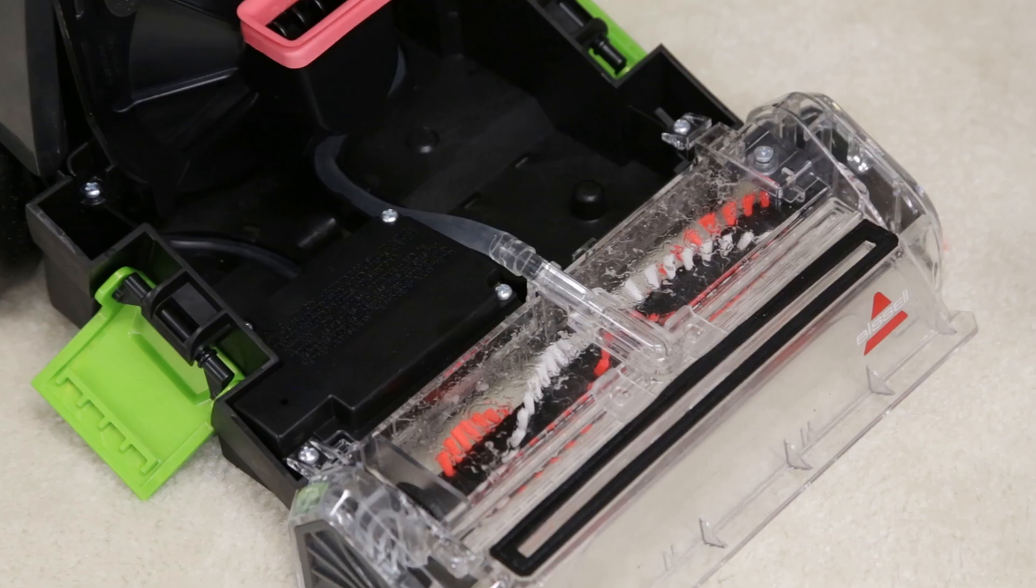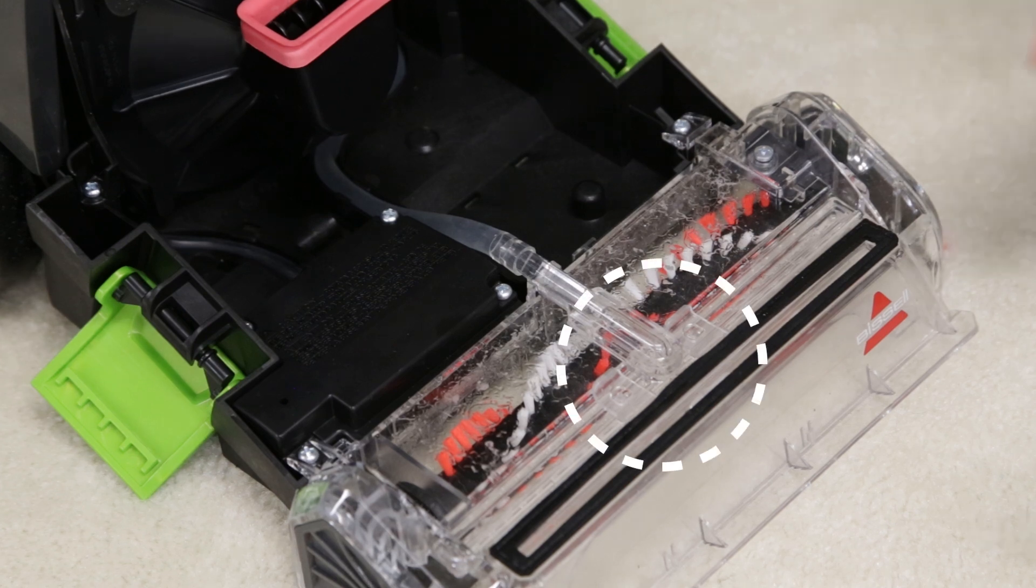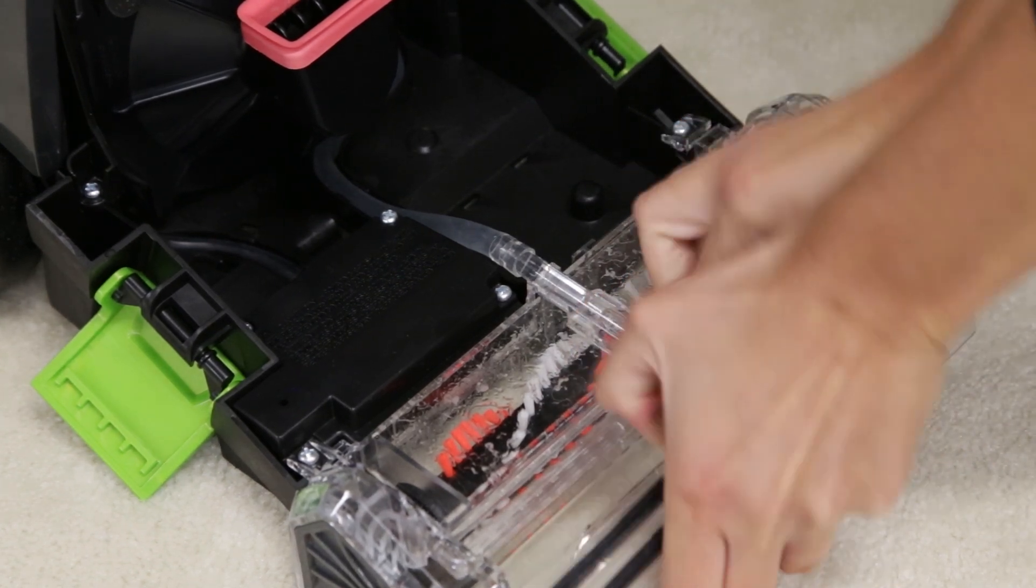To remove the nozzle, with the collection tank off the unit, gently pull the two tabs that point up near the front of the unit. Unhook the nozzle to remove it.